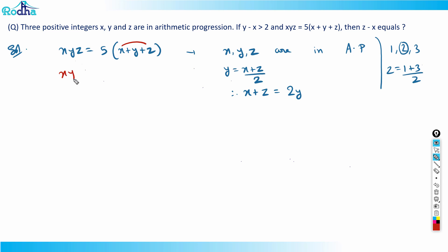I'll be getting xyz is equal to 5 into x plus z, which is 2y, so 2y plus y is 3y, so 5 into 3y. Now what can happen? Because I know that y is a positive integer, so I can cancel y both sides. Therefore I can get x into z equal to 15.